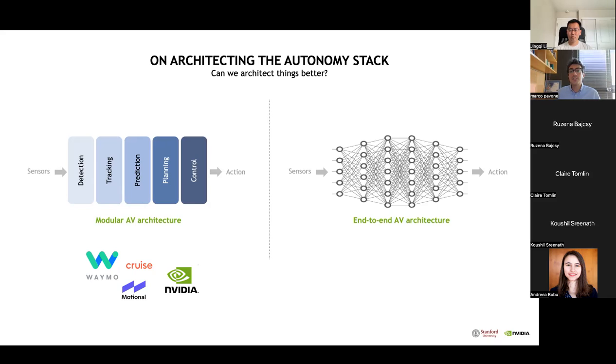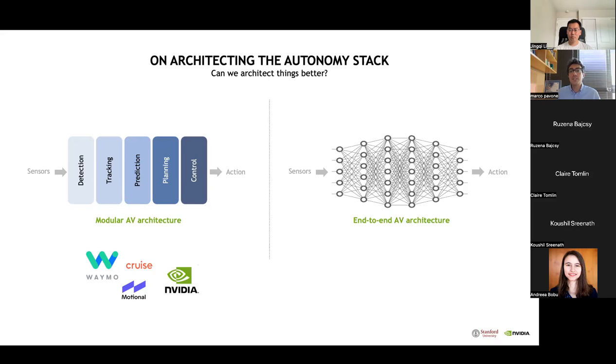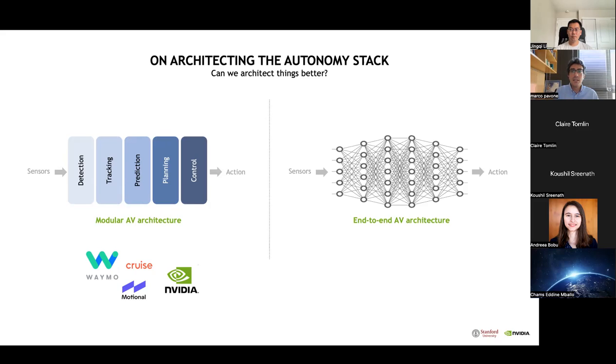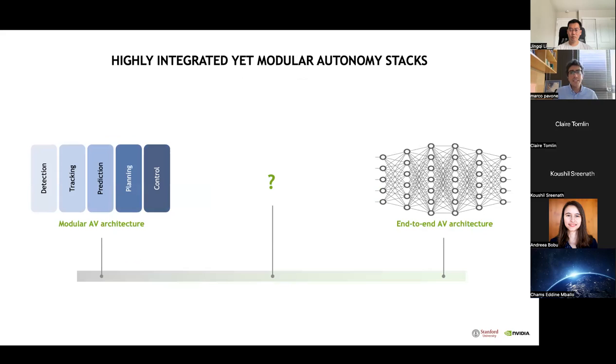At the other end of the spectrum, we have end-to-end architectures that have gained momentum in the past few years, which directly link perception to control, typically through a neural network, and only implicitly encode key capabilities such as agent prediction. As key advantages, an end-to-end architecture removes information bottlenecks and might achieve a level of optimality unattainable by modular architectures. However, it is very difficult to make any sort of formal safety claim with such an architecture.